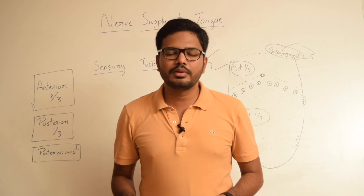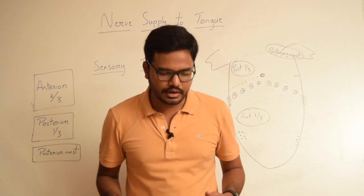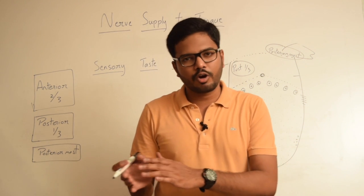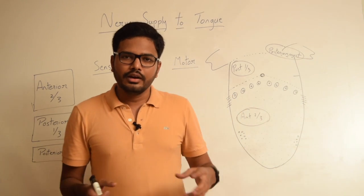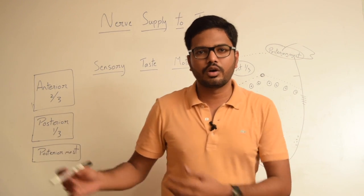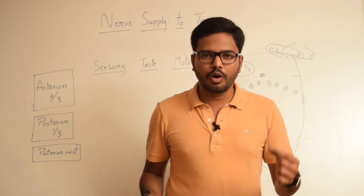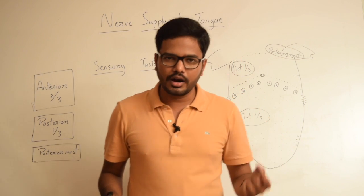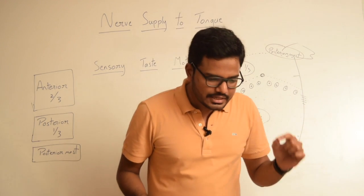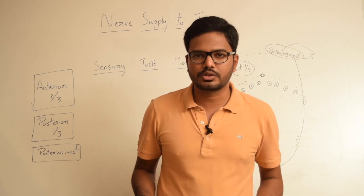In this video I will be discussing nerve innervation to the tongue. The reason why this topic is a bit confusing and complex is because different parts of the tongue have different sources or origins. So once we understand and trace out the origin of different parts of the tongue including its musculature, it will be easier to remember and understand the nerve innervation to the tongue.